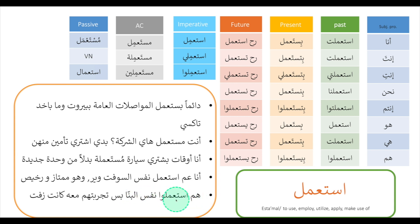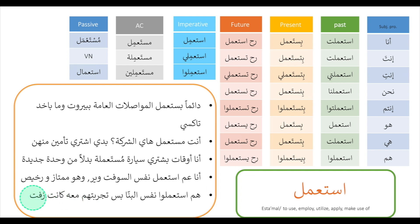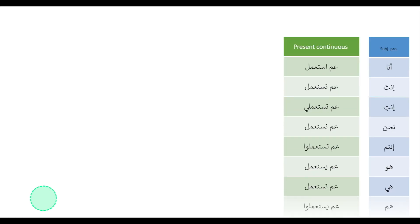هنة استعملوا نفس البنّا بس تجربتهم معه كانت زفت. They used the same builder but their experience with him was rubbish. تجربة means experience. زفت means rubbish. Now let's have a look at the present continuous.